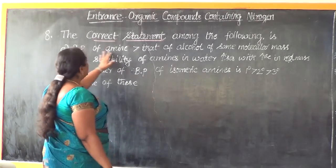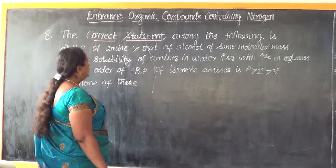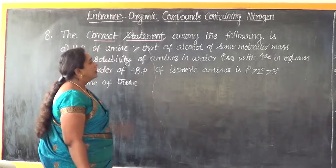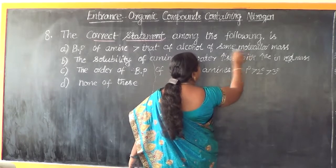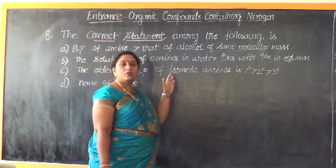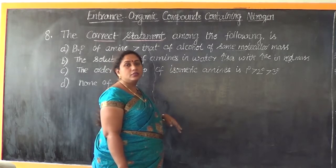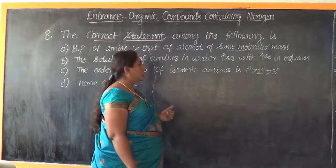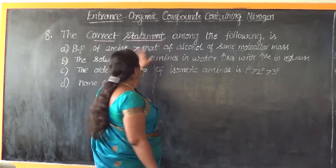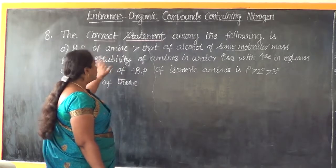The first statement: boiling point of amines is greater than that of alcohol of the same molecular mass. This is not correct, because alcohols have much stronger hydrogen bonding since oxygen is more electronegative than nitrogen. Therefore, intermolecular hydrogen bonding is much stronger in alcohols, so alcohols have a greater boiling point than amines. This is not a correct statement.